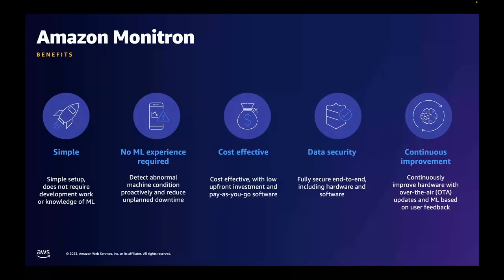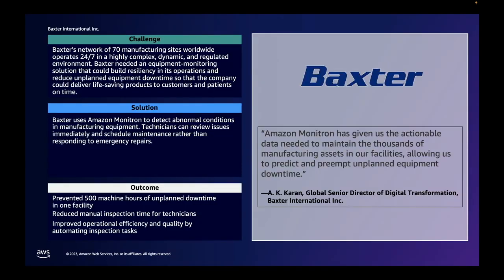Amazon Monitron sensors and gateways are also verified for their authenticity using unique identity keys generated at the time of device production, ensuring that malicious devices cannot register and access the service. It also increases accuracy with continuous improvement — technicians can enter feedback on the alerts in the mobile app and Amazon Monitron learns from that feedback to continuously improve over time.